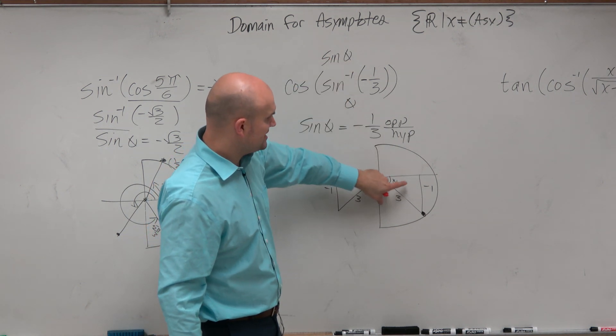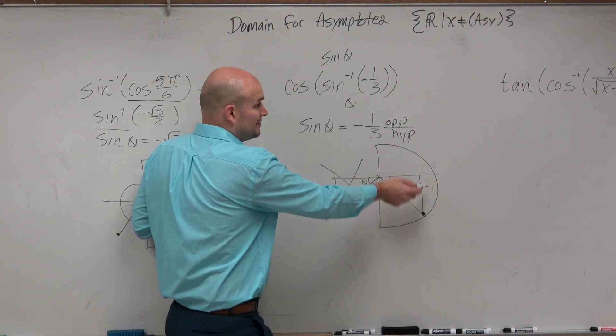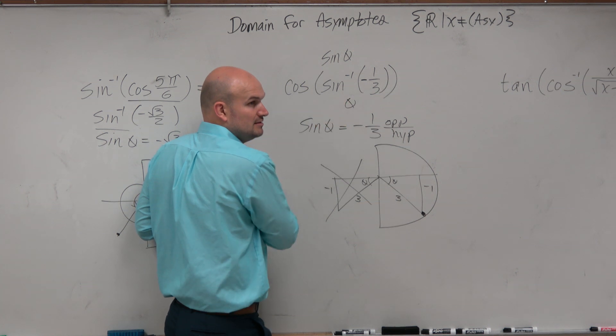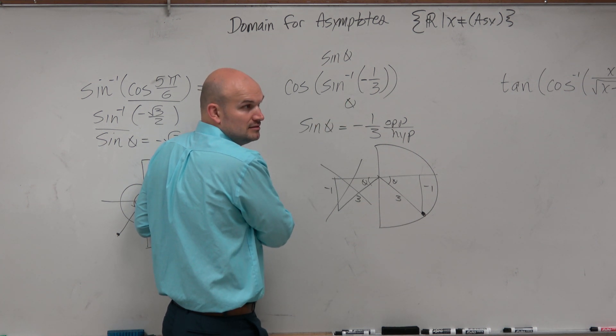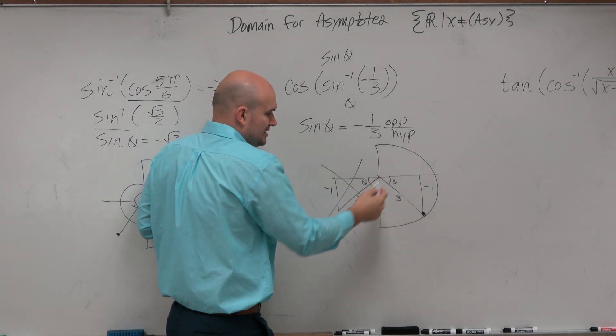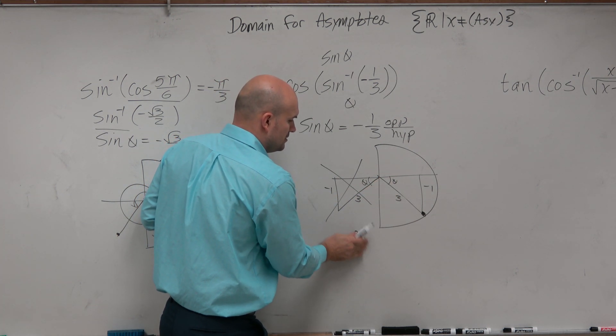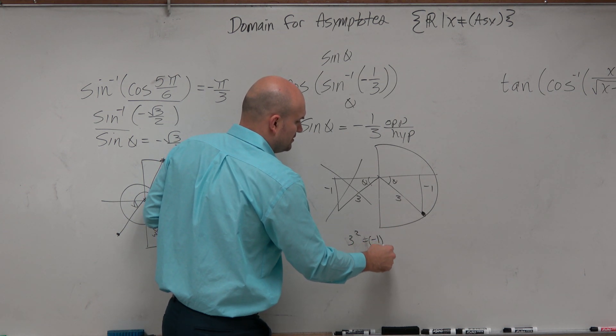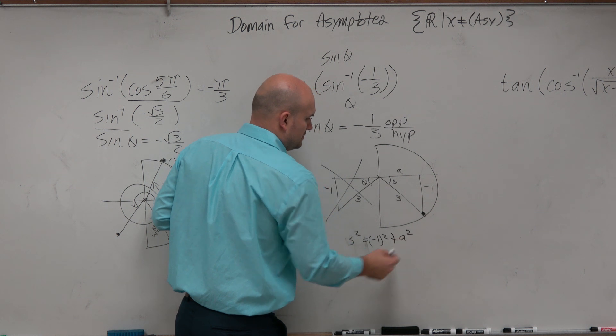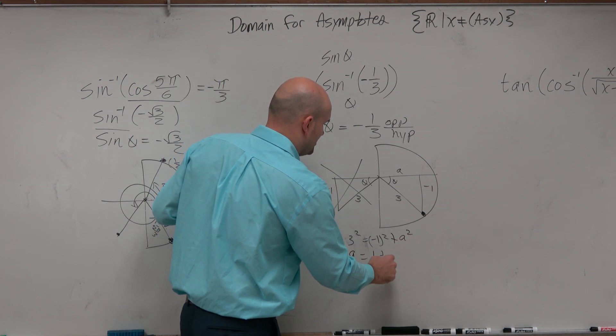Now, this creates this triangle for me. Can I, based on this triangle that I created, based on this information, find the cosine of that? Yeah. This is stuff you already know. All you got to do now is use the Pythagorean theorem. So I'd have 3 squared equals negative 1 squared plus, let's call this A, plus A squared. So we have 9 equals 1 plus A squared.